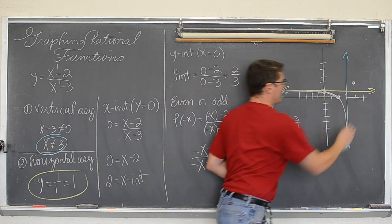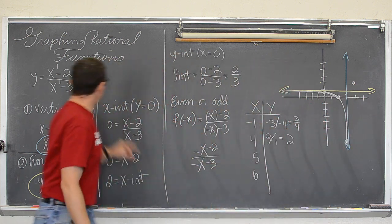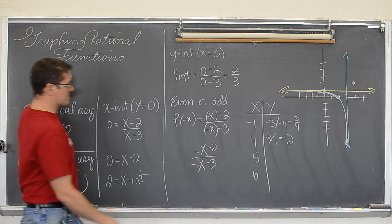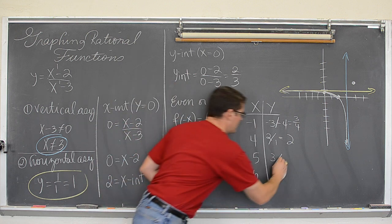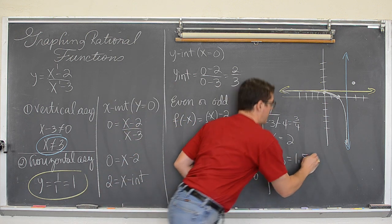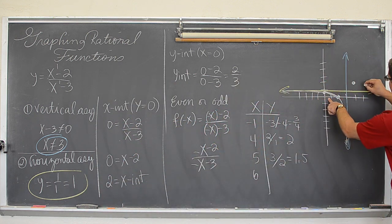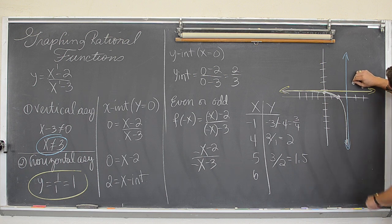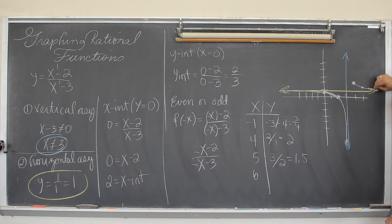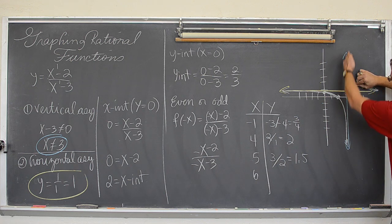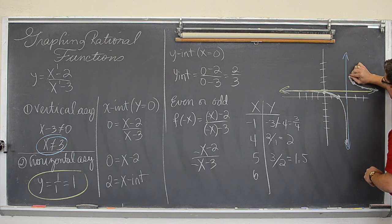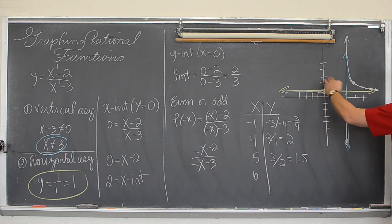At 5, and I think that might be all we need. At 5 we have 5 minus 2 which is 3 over 5 minus 3 which is 2. And that is 1.5. So at 5 we are at 1.5. And this graph is going to continue to come down and get closer to closer to y equals 1 as x goes off to infinity. And as we get closer to the vertical asymptote at x equals 3 it is going to continue to go up to positive infinity.